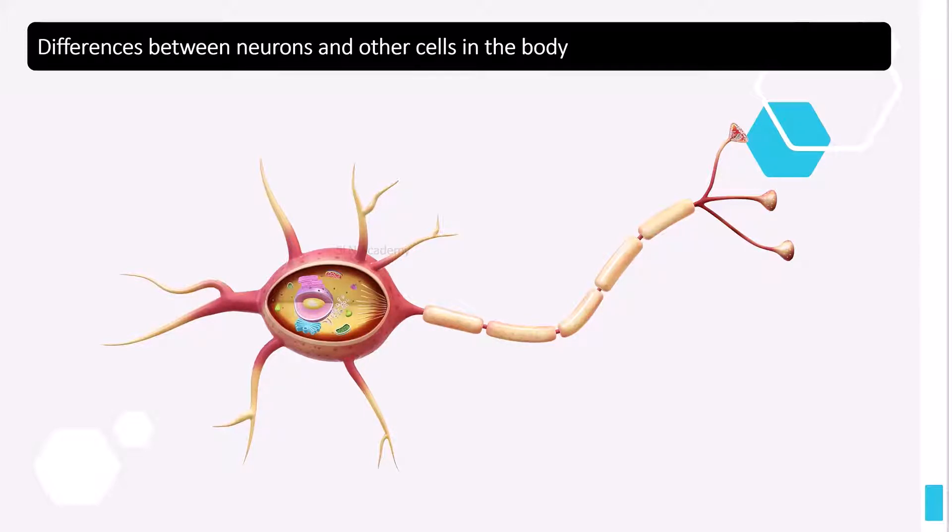Neurons have specialized extensions called dendrites and axons. Dendrites bring information to the cell body and axons take information away from the cell body. Neurons communicate with each other.